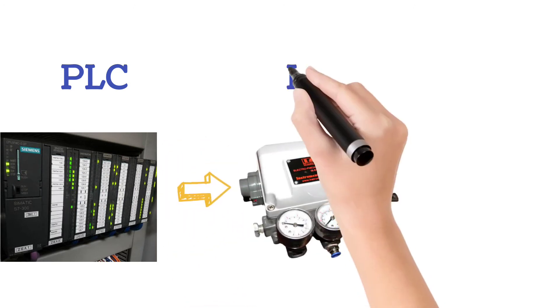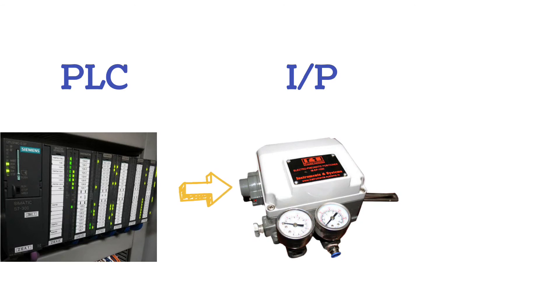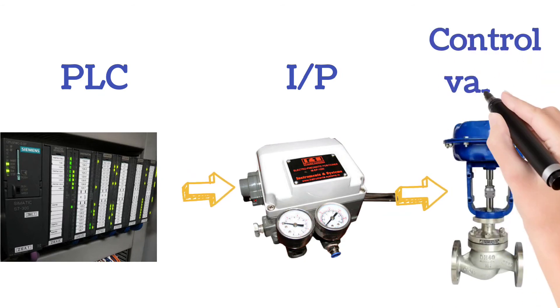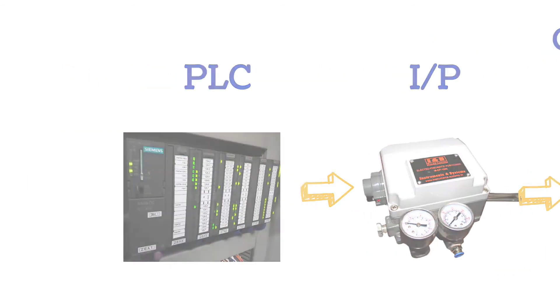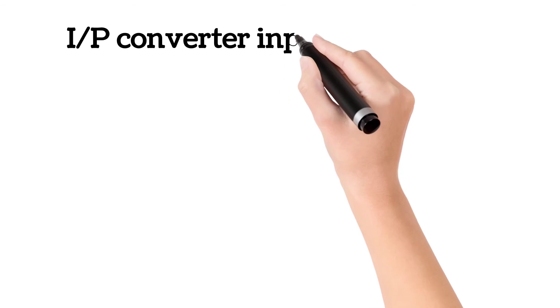With the help of these images, you can see the flow diagram of signals. First signal or electrical signal is fed to I to P converter or electro pneumatic valve positioner. Then signal is given to a pneumatic control valve.